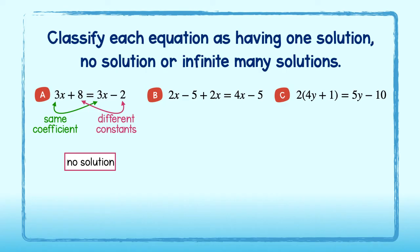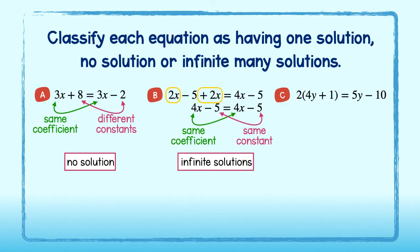In problem B, you'll notice it needs a little bit of simplifying to get both sides in the form that we wanted in, ax plus b. So I will combine these terms to get 4x minus 5 equal to 4x minus 5. There. Now I can see that they have the same coefficient and the same constant. Therefore, there are an infinite number of solutions.